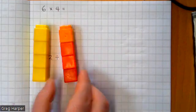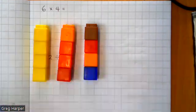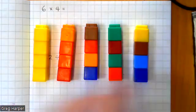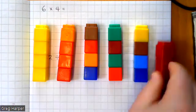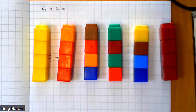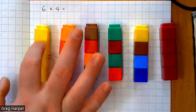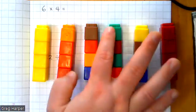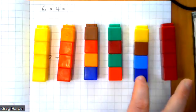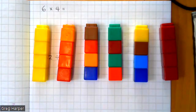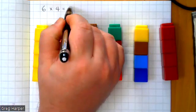So that's one group of four, two groups of four, three groups of four, four groups of four, five groups of four, and six groups of four. Now I've made my six groups of four, all I need to do is count the multi-link in total — counting up to 24 — and that tells me the answer to six times four is 24.